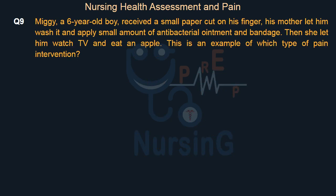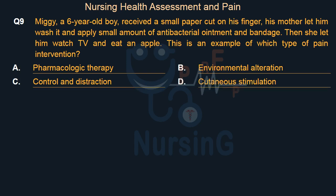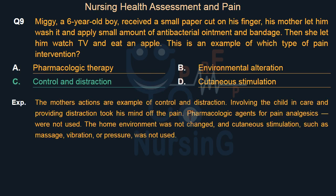Miggy, a 6-year-old boy, received a small paper cut on his finger. His mother let him wash it, apply antibacterial ointment and a bandage, then watch TV and eat an apple. This is an example of which type of pain intervention? Option A: Pharmacologic therapy. Option B: Environmental alteration. Option C: Control and distraction. Option D: Cutaneous stimulation. The right answer is Option C: Control and distraction. Involving the child in care and providing distraction took his mind off the pain. No pharmacologic analgesics were used, the home environment was not changed, and cutaneous stimulation such as massage, vibration, or pressure was not used.